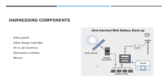Now here is a more proper way to look at it. To generate and harness the energy we need more components than just solar panels. Components can be like solar panels, solar charge controllers, DC to AC inverters, disconnecting switches, and meters. The meter would tell us how much energy we need to generate or how much it is generating. So these are all the components that play a part in harnessing the energy from the sun rays.